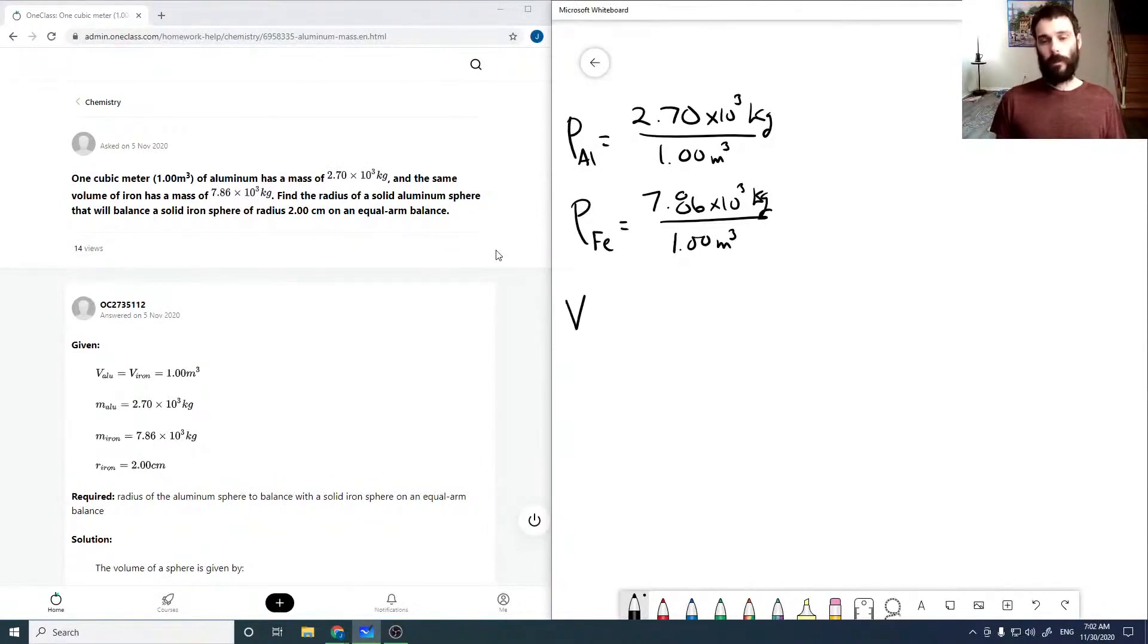So volume of a sphere is 4 thirds pi r cubed. And that's going to get us to our mass through our density that we're given in the question.